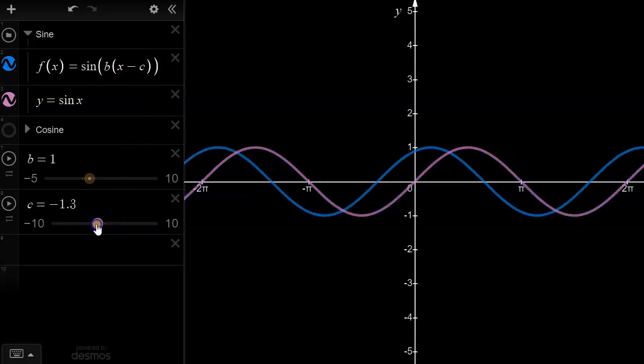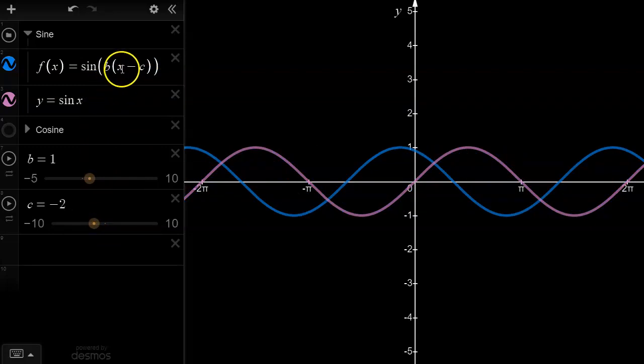Whereas if c was negative, say negative 2, then you would see x minus negative 2. Now x minus negative 2 turns out to be x plus 2, which again you would understand as meaning 2 units to the left.